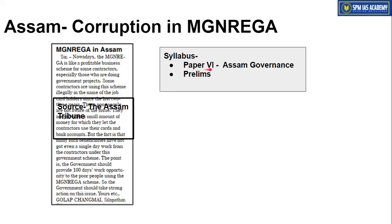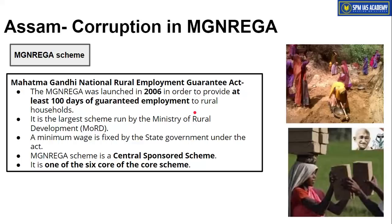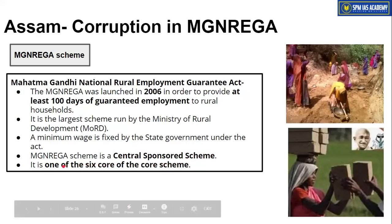The next article is from the Assam segment and is about corruption in the MG NAREGA scheme. This topic is important from Paper 6 Assam Governance point of view. MG NAREGA stands for Mahatma Gandhi National Rural Employment Guarantee Act, launched in 2006. Its main purpose is to provide a minimum of 100 days of guaranteed employment to unskilled people in rural areas at minimum wages. Minimum wages are fixed by the state government under the Minimum Wages Act. This scheme is a centrally sponsored scheme run jointly by the state and central governments, and is one of the six core-of-the-core schemes.